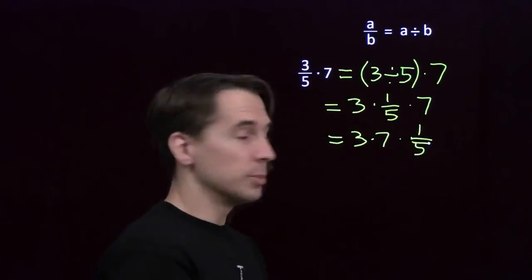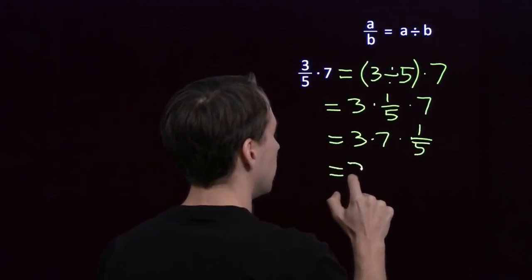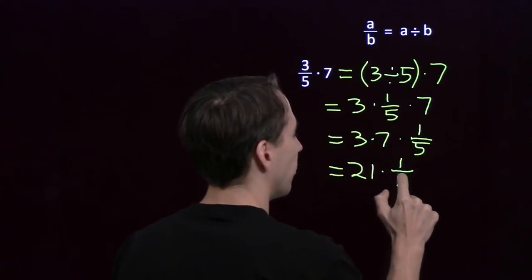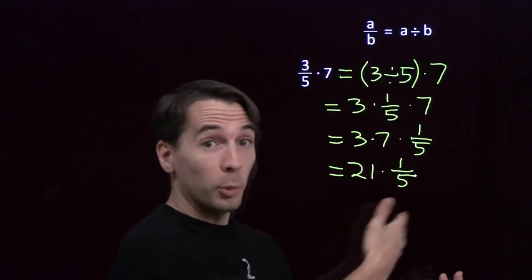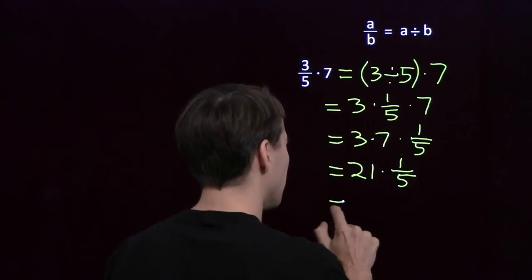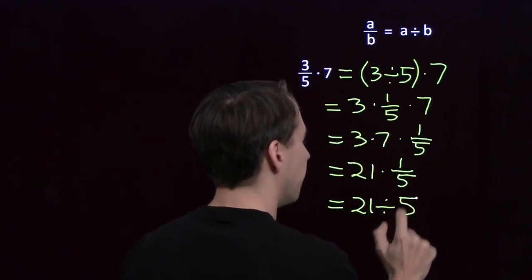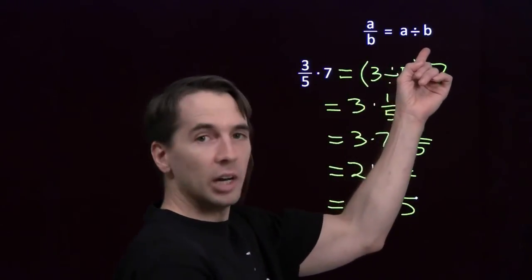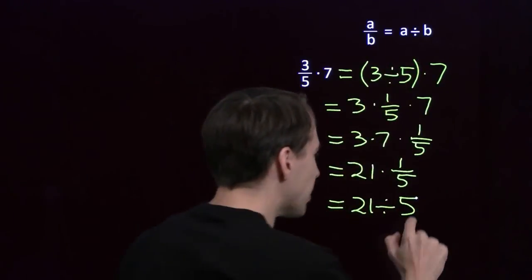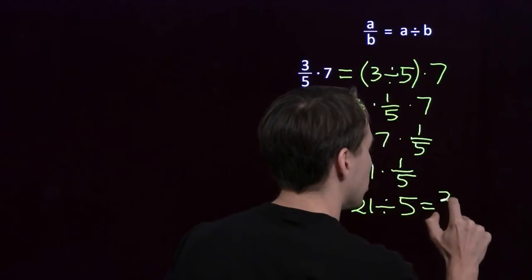And 3 times 7, that's 21. 21 times 1 over 5. 21 times 1 over 5, we're multiplying by a reciprocal. That's just division. 21 divided by 5, and 21 divided by 5, that's what a fraction is. It's just a division.